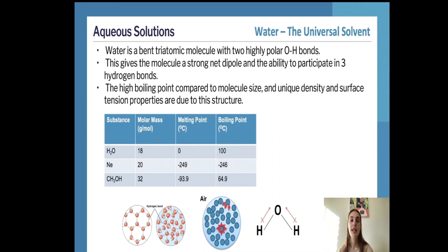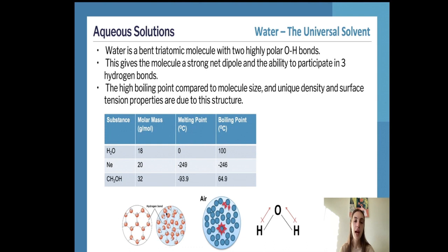Water has a very strong net dipole and can participate in three different hydrogen bonds — from the oxygen molecule where the electrons are centred, or from either of the two hydrogen atoms where the protons are centred. We can see in the bottom-left diagram here how these hydrogen bonds form a web-like structure due to these attractions.